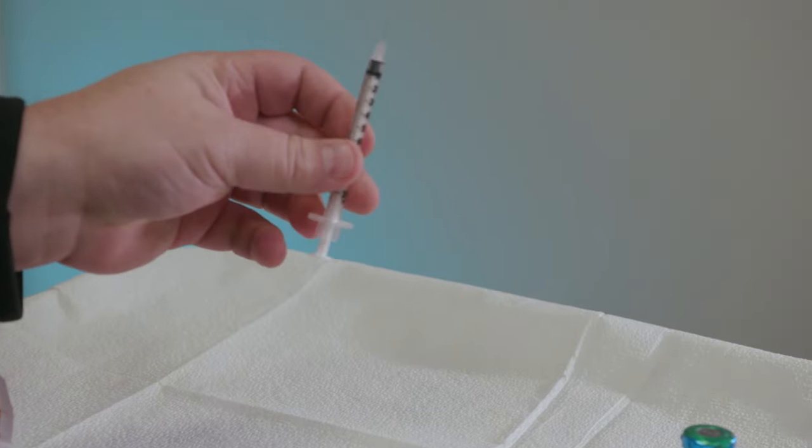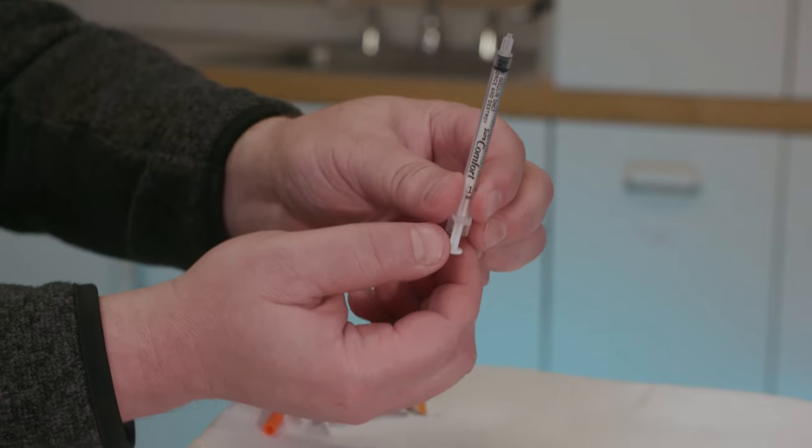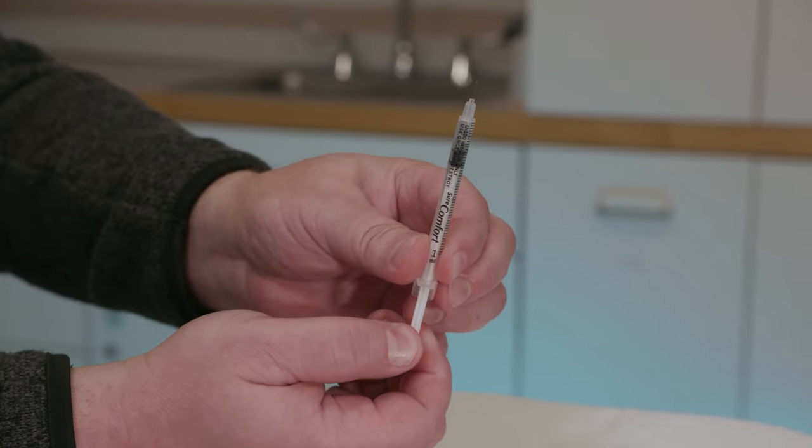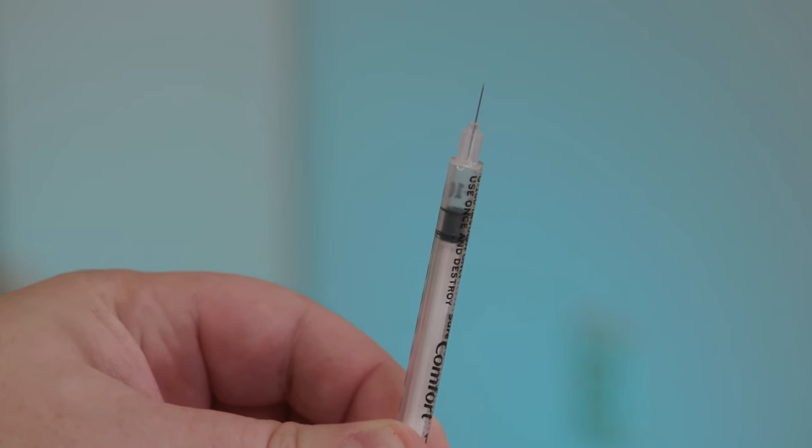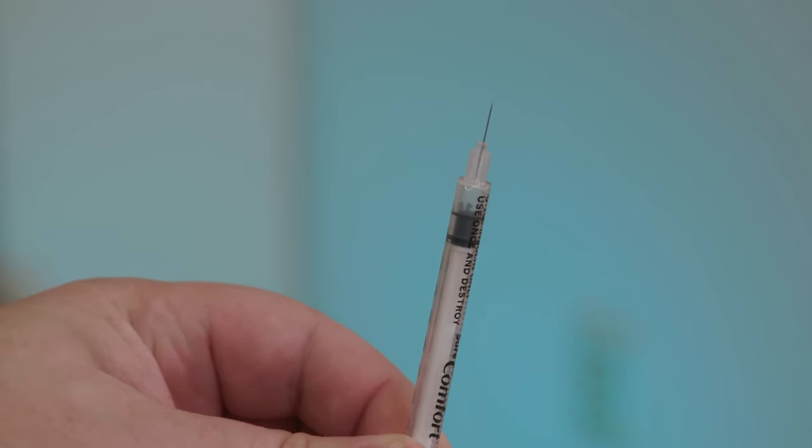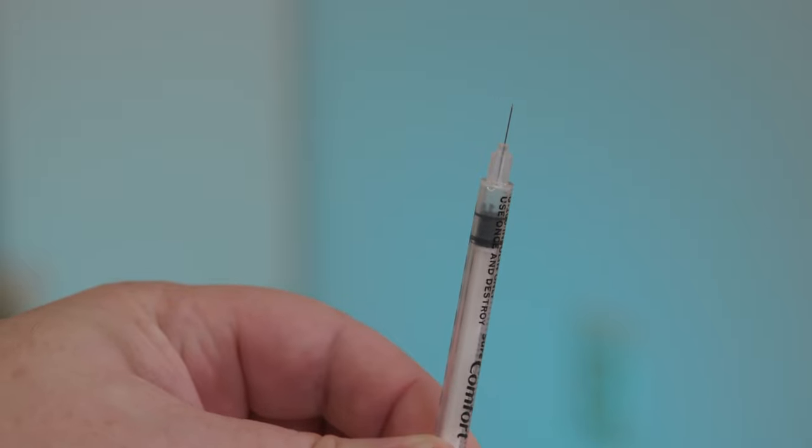Holding the syringe with the needle pointed up, pull the plunger back past the dose your care team told you to inject. Then, push it back up until the top of the plunger, the part closest to the needle, is at the dose you need to inject.